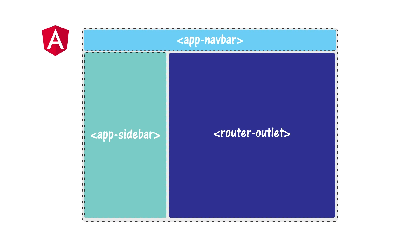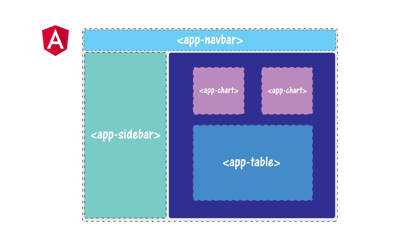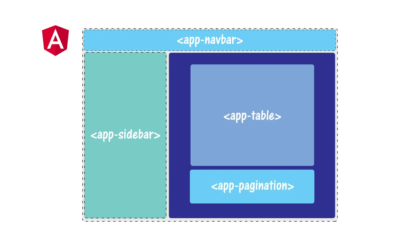For a dashboard, we'll have three different parent components that can get rendered inside of the router outlet. These components themselves will contain subcomponents or child components that will define things like our charts and tables, and we'll be able to arrange these in any way that we like to create different pages. We'll have a page with some charts, a page with a table component and a pagination component, as well as other components we'll talk about when we get to designing them.